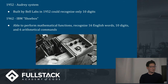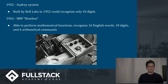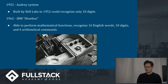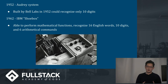Then we get the Audrey system built by Bell Labs that could recognize only 10 digits, and the IBM Shoebox in 1962, which could recognize 16 words and 10 digits and perform mathematical calculations. With these systems you had to use discrete speech, meaning you had to say each word or digit separately.